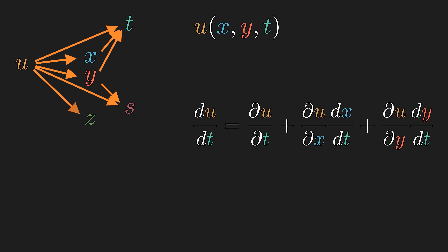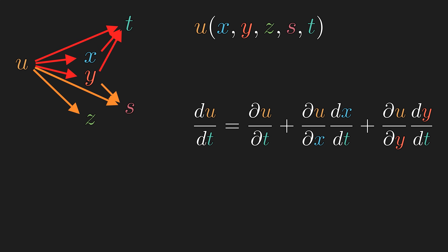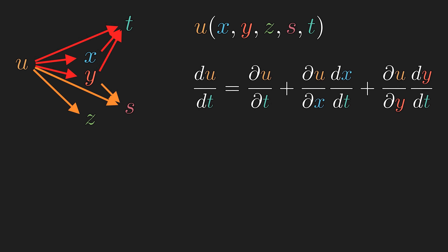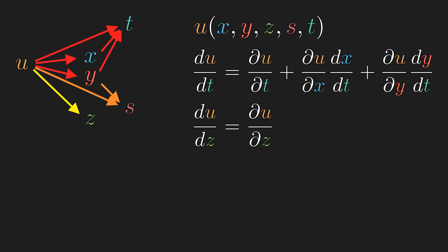Now let's throw in a couple of variables that are independent from T. So U explicitly depends on five variables. But U still depends on T the same way — explicitly and through X and Y — so the total derivative still has three terms. The total derivative of U with respect to Z and the partial derivative are the same, since there's exactly one path from U to Z. Similarly, dy/dt is the same as ∂Y/∂T, so despite Y depending on two variables T and S, we don't have to use partial derivative in that factor.